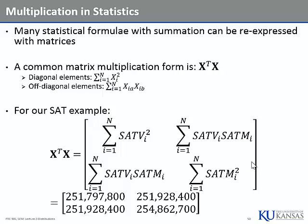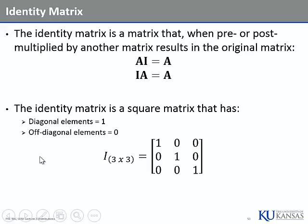We've gotten through addition, subtraction, and multiplication — and multiplication is the weirdest of all of them so far. Now, the matrix identity: just like the number one, it's something that when you multiply a matrix by it, you get the matrix back. The identity matrix is square — here's a three-by-three — where the diagonal elements are all equal to one.